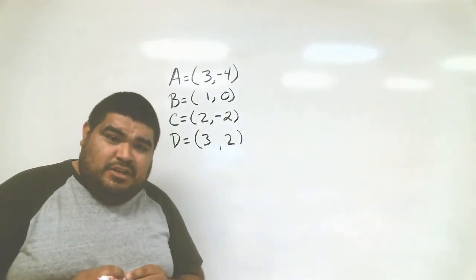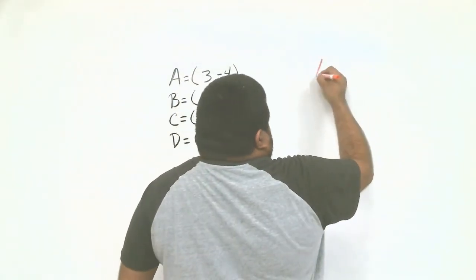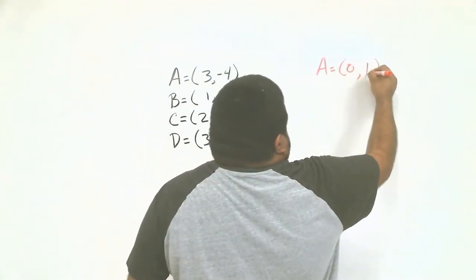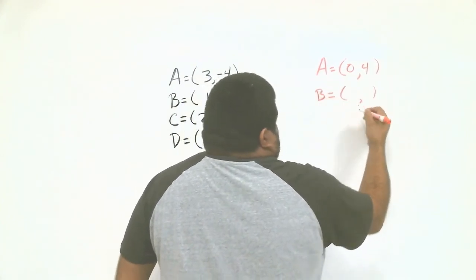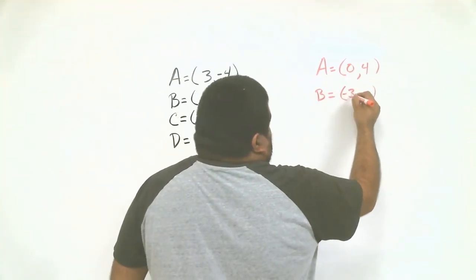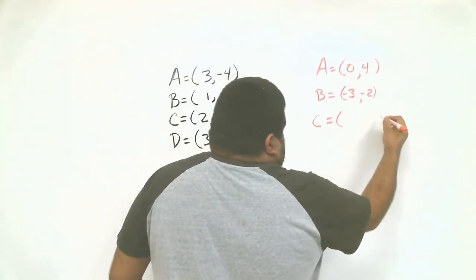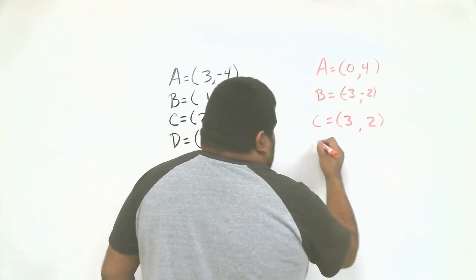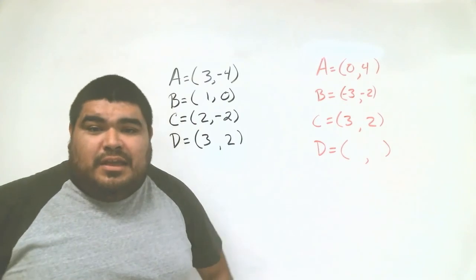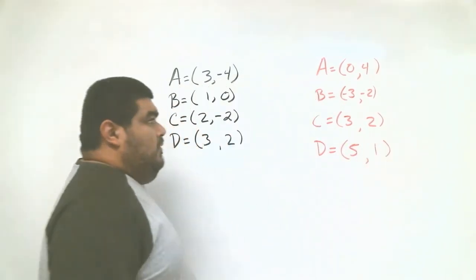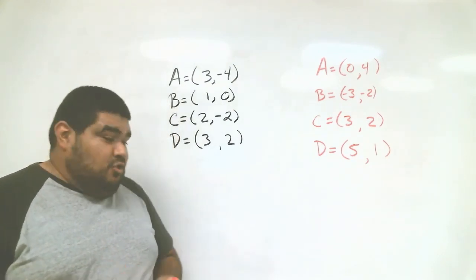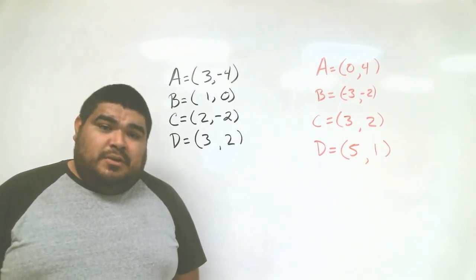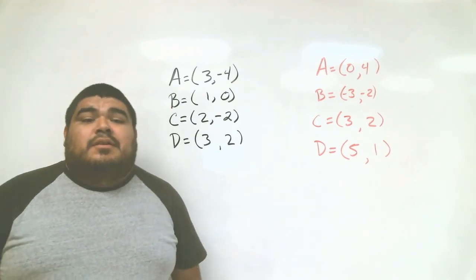For your second problem: A equals 0 and 4, B is at negative 3 and negative 2, C is at 3 and 2, and D is at 5 and 1. Make sure you graph them and tell me if it's a function or not. Submit your work and also submit your notes so I can verify that you're taking them down. I'll be hearing from you soon.